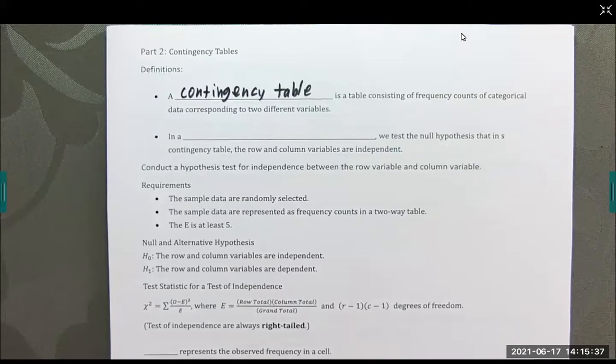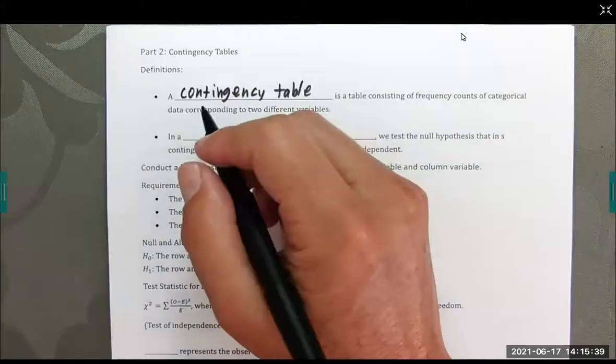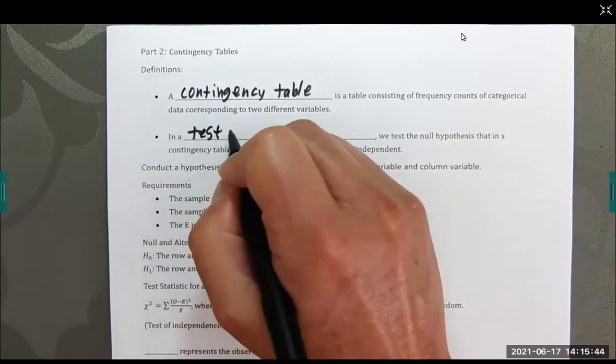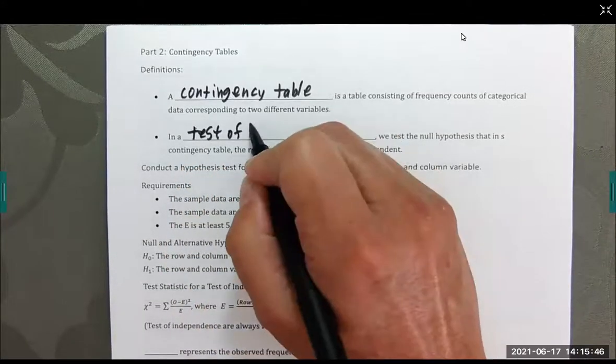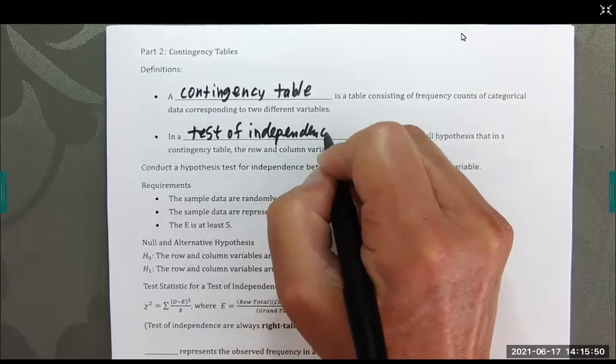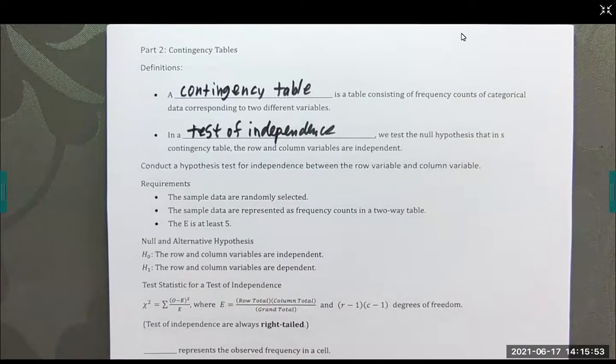And the next definition is in a test of independence. We test the null hypothesis that is in a contingency table, the row and column variables are independent. So we're going to conduct a test for independence between the row variable and the column variable.